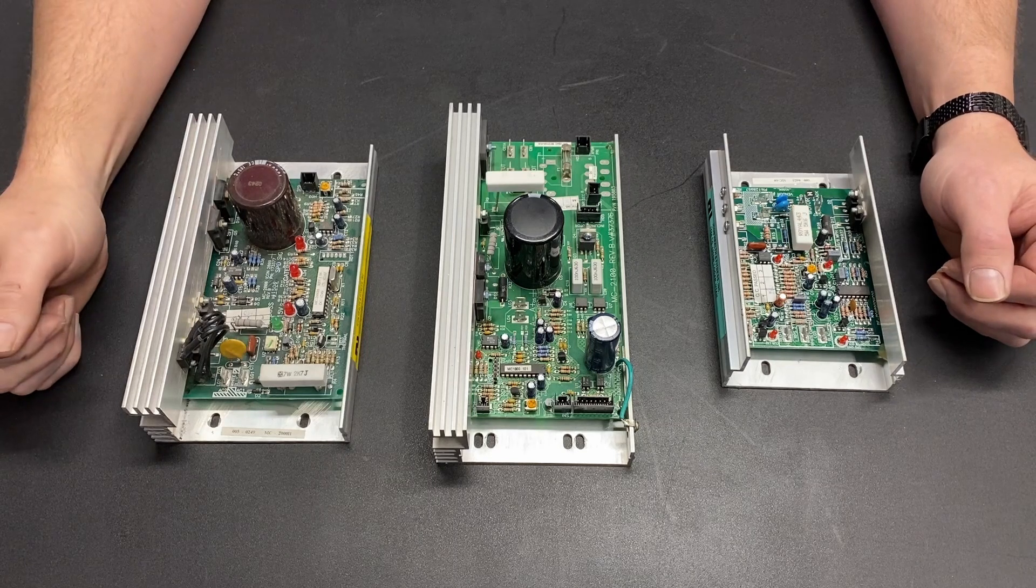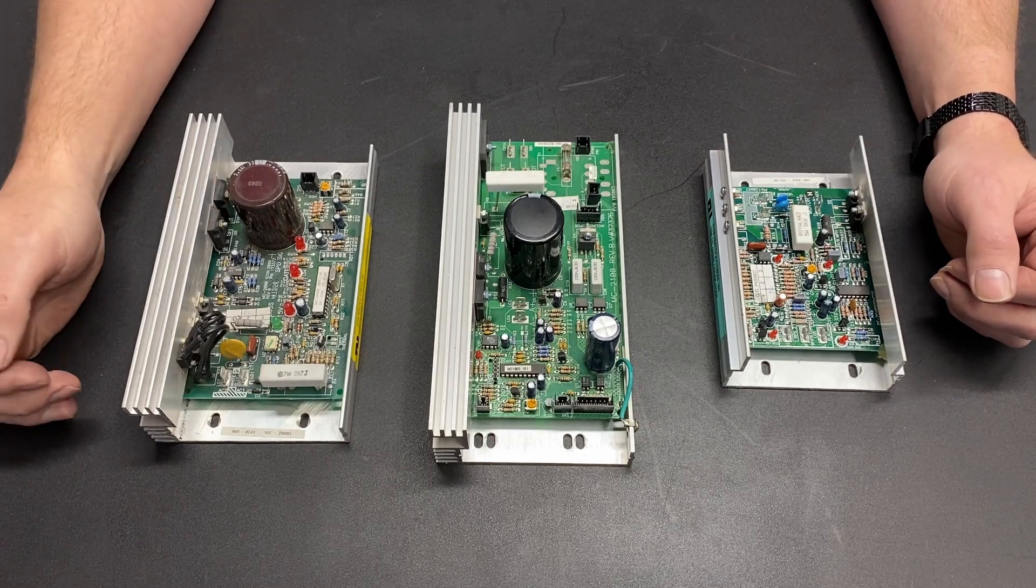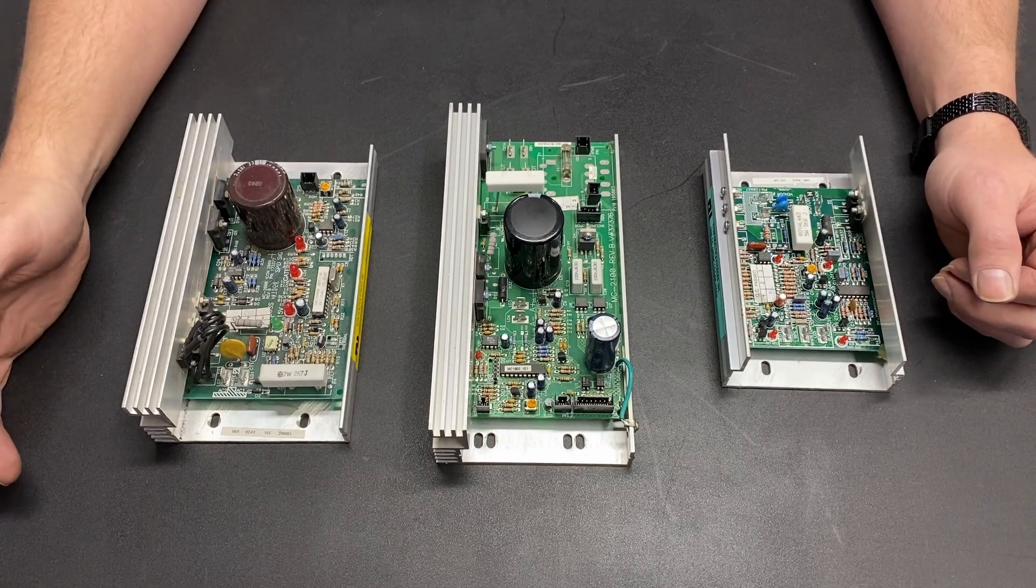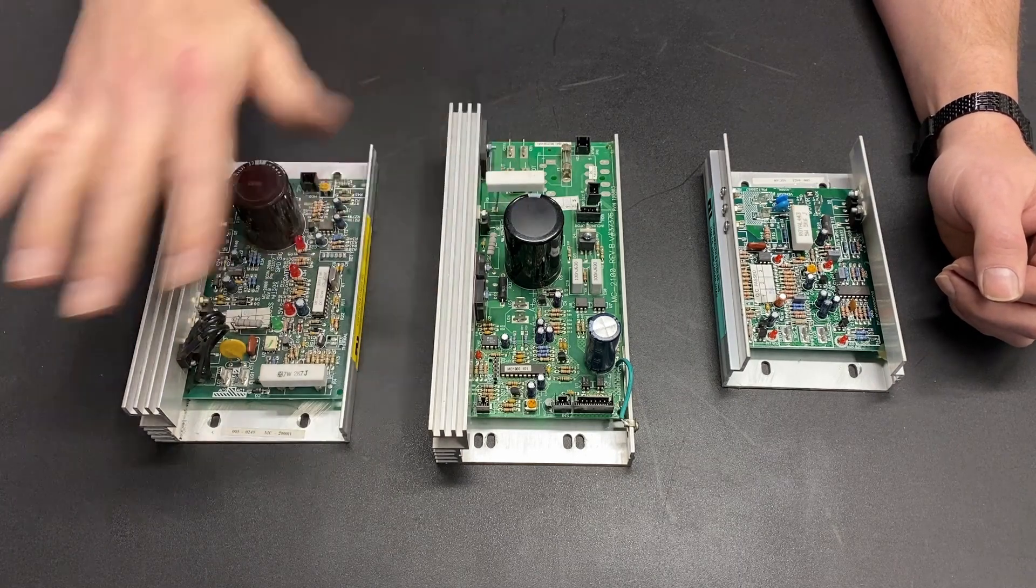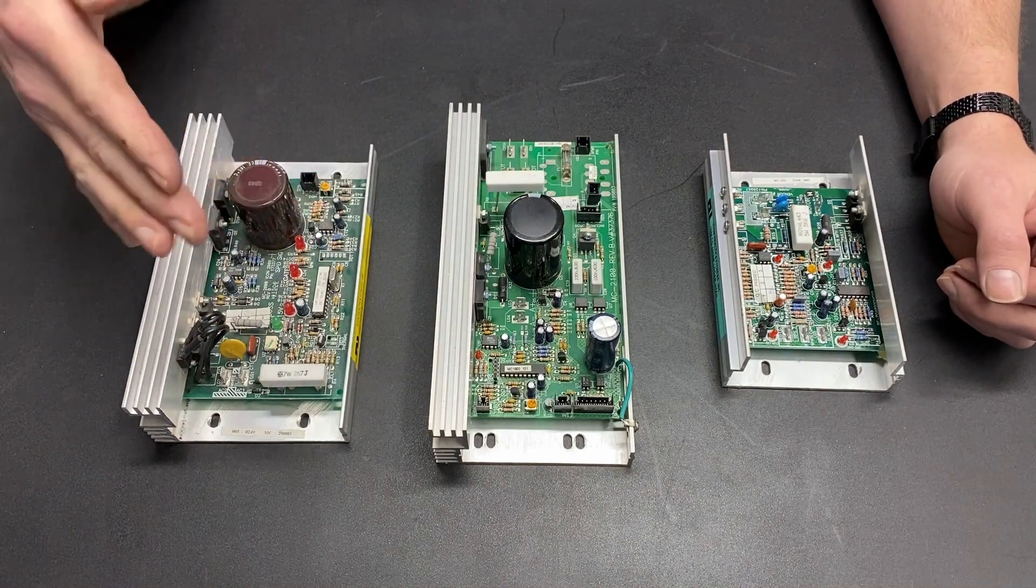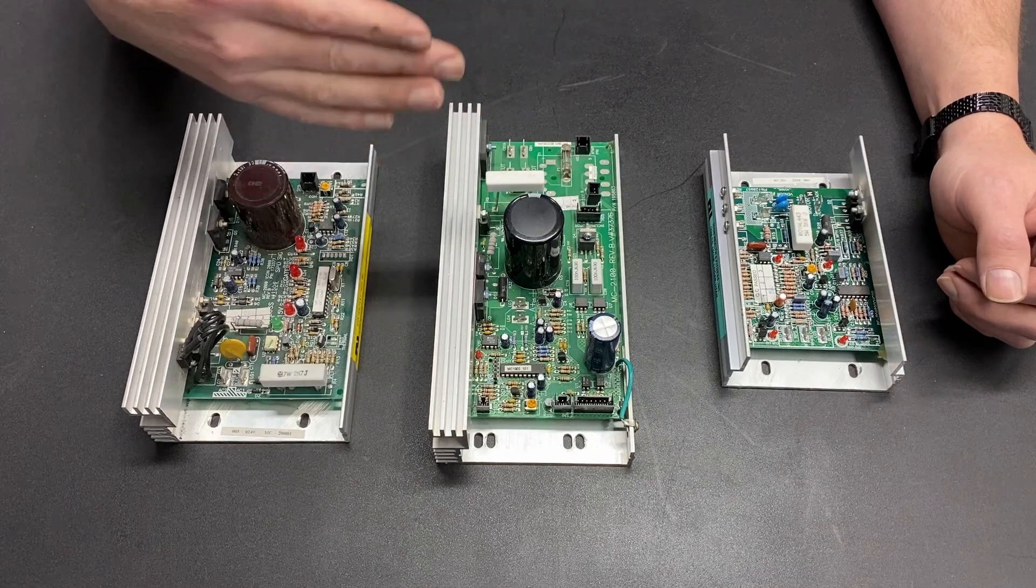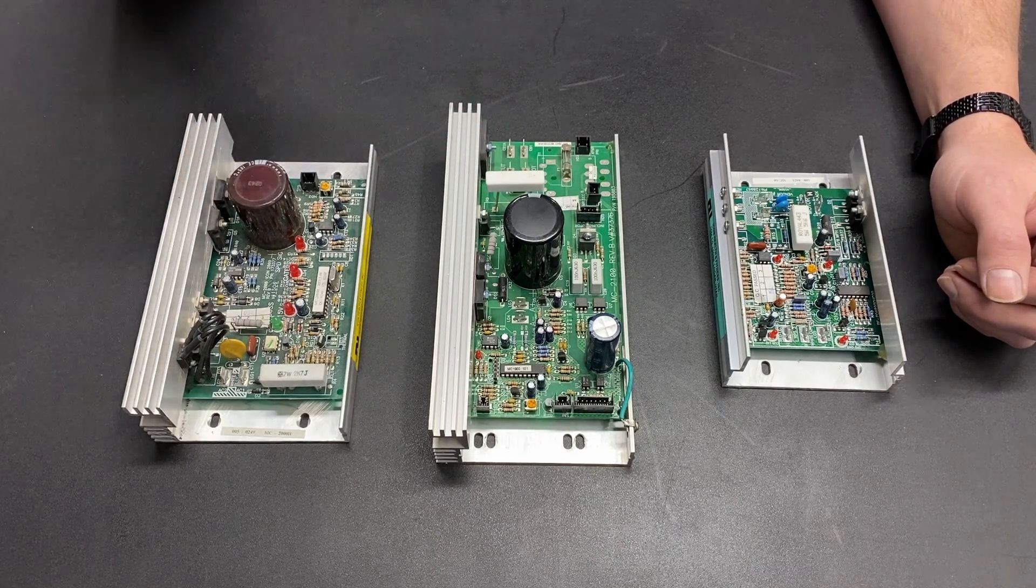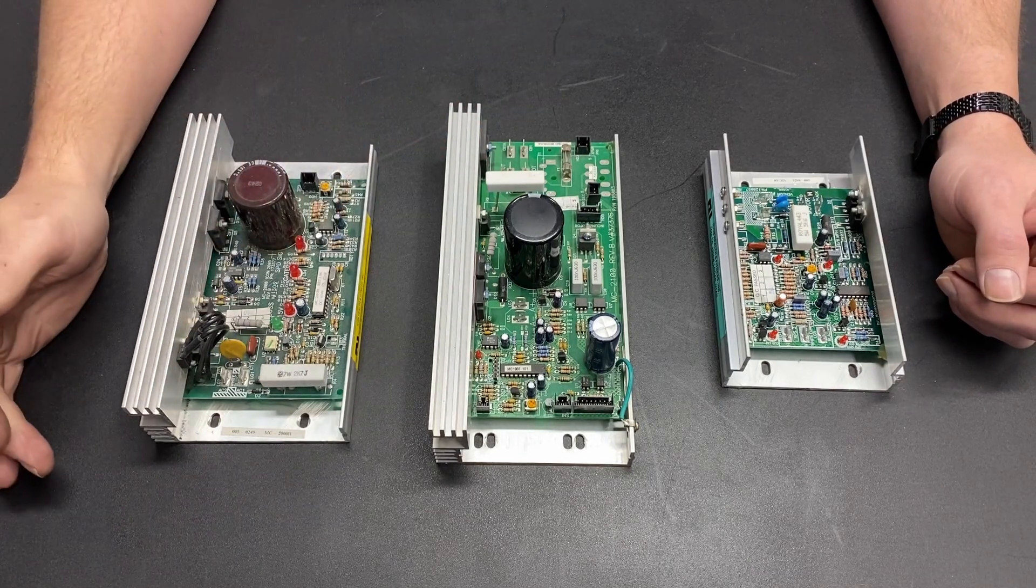then I flip the master power, let everything come to a stop, I flip it back on, nothing's going to turn on. This is a safety feature built into treadmills because they don't want someone to be standing on a treadmill and it to ramp up to max speed.